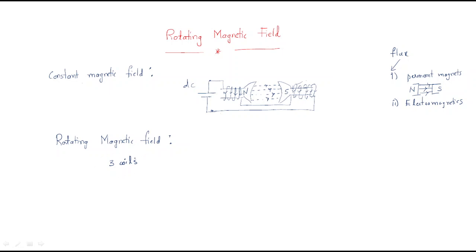These conductors are arranged in the same manner and will give the same amount of flux. So we have three coils and to produce the rotating magnetic field we require a three-phase supply. We also require three coils, and each coil has a phase displacement of 120 degrees — since 360 degrees divided by 3 gives 120 degrees.